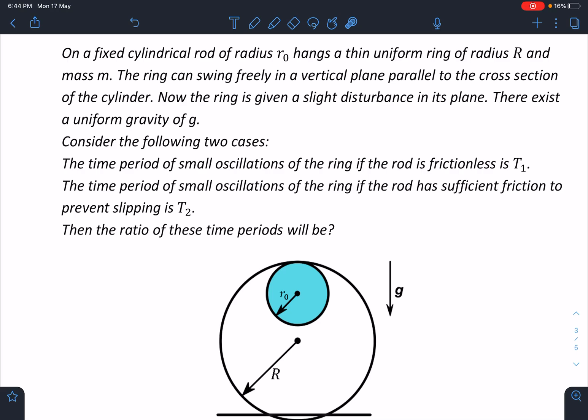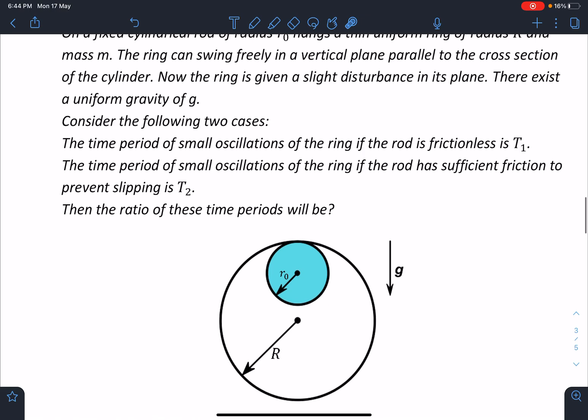Consider the following two cases. The time period of small oscillation of the ring if the rod is frictionless is T1 and the time period of small oscillation of the ring if the rod has sufficient friction to prevent slipping is T2. Then the ratio of these time periods T1 and T2 will be.